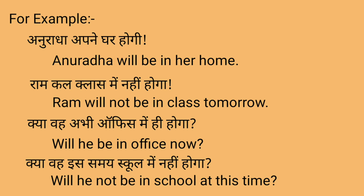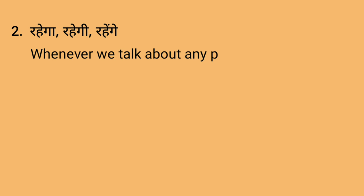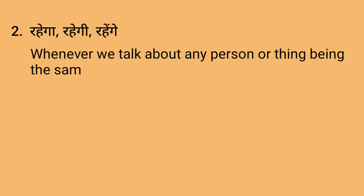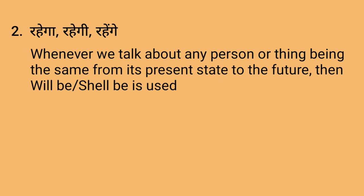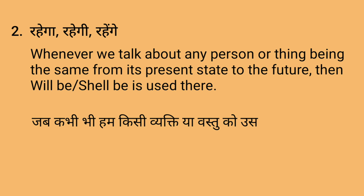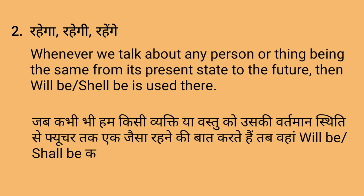Second point: Rahe ga, rahe gi, rahe ge. Whenever we talk about any person or thing being the same from its present state to the future, then will be or shall be is used there. Jab kabhi bhi hum kisi vyakti ya vastu ko uski vartaman sthiti se future tak ek jaisa rahne ki baat karte hain, tab wahan will be, shall be ka priyog kiya jata hai.